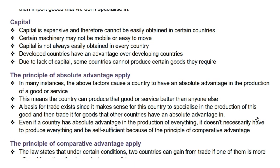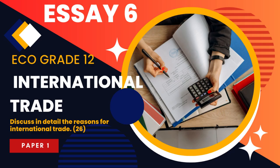The last reason for international trade is capital. Capital is expensive and therefore cannot be easily obtained in certain countries. Certain machinery may not be mobile or easy to move. Developed countries have an advantage over developing countries, and due to lack of capital, some countries cannot produce certain goods they require.